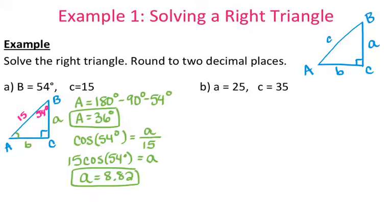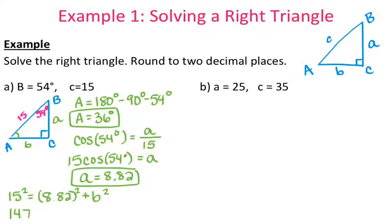Now I have side a = 8.82. The last thing I need is side b. Since I know two sides of the right triangle, I can use the Pythagorean theorem. So 15² = 8.82² + b². That gives me 15² minus 8.82² = 147.2076 = b². Taking the square root gives me b = 12.13.